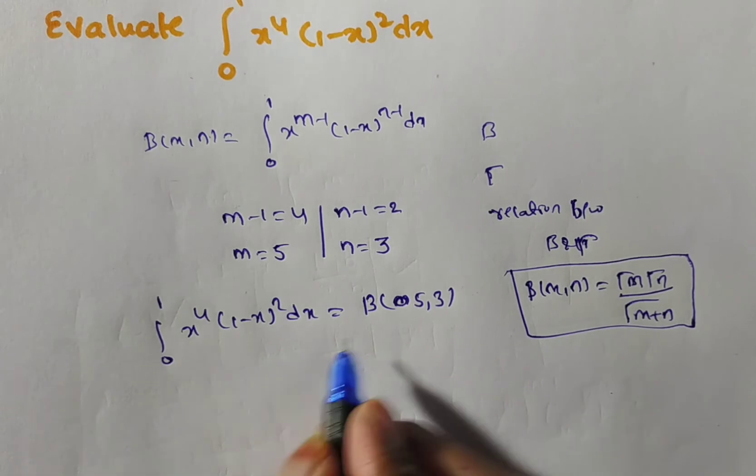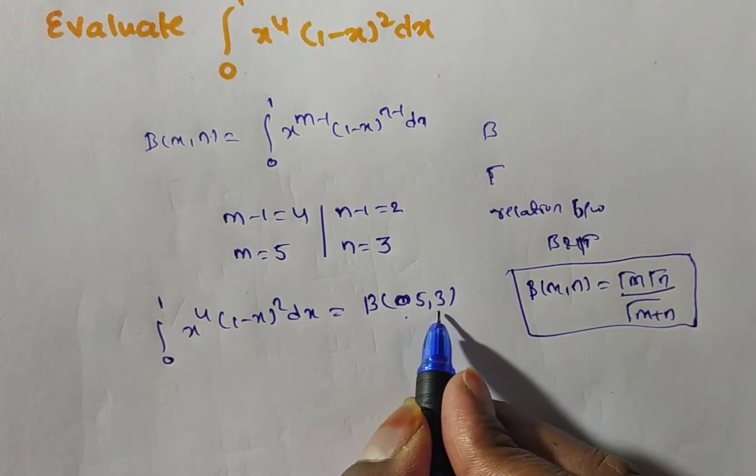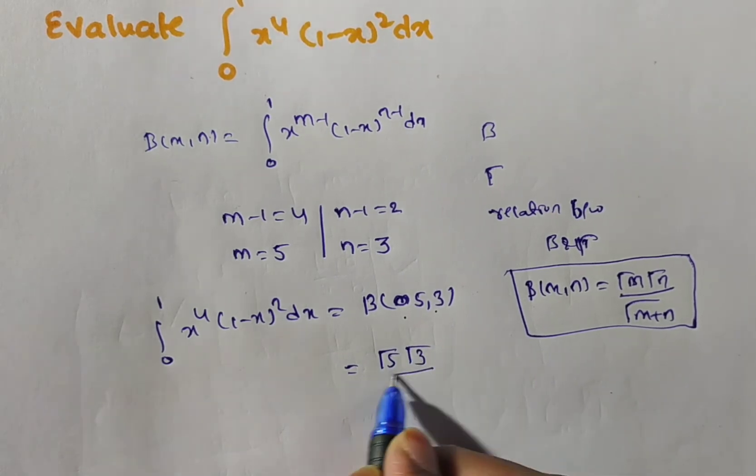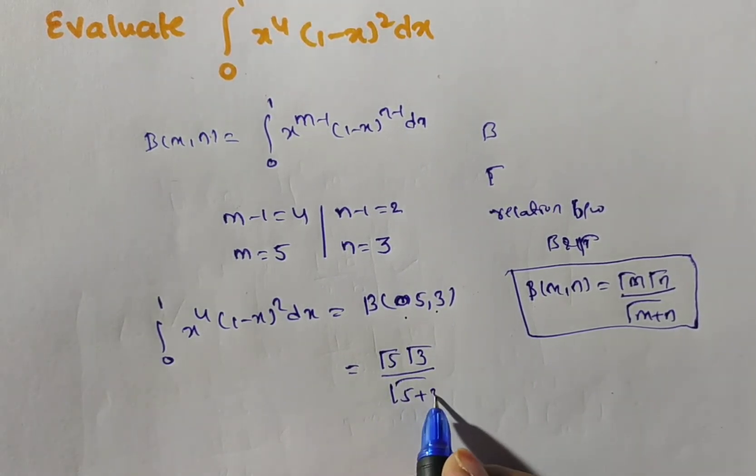Now, in place of m what I have? 5. In place of n, 3. So, substitute in this formula, then what you will have? Gamma 5, gamma 3 by gamma of 5 plus 3.